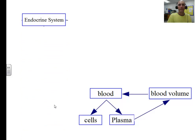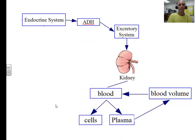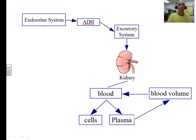ADH from the endocrine system travels to the kidneys, keeping them from excreting fluid that's in the blood and returning that fluid back to the bloodstream, thereby maintaining blood volume. So if you're dehydrated, ADH is released in large amounts, your urine volume drops, and your blood plasma volume — and thus blood pressure — is maintained.